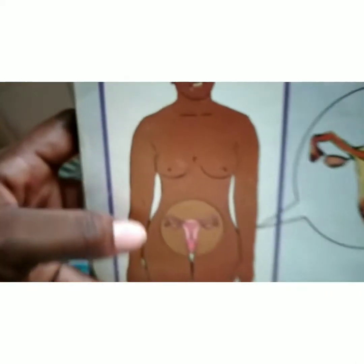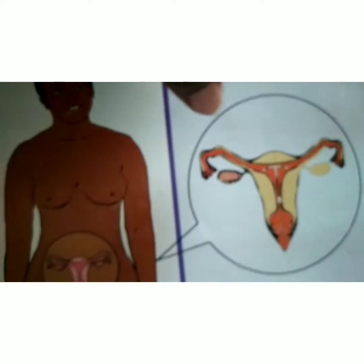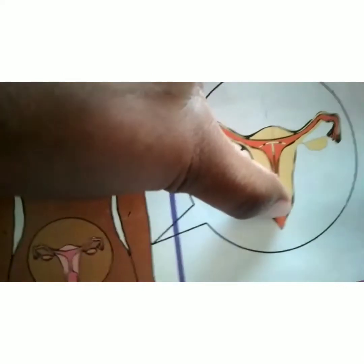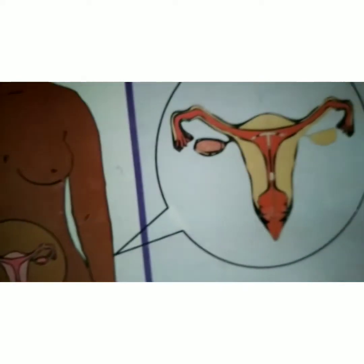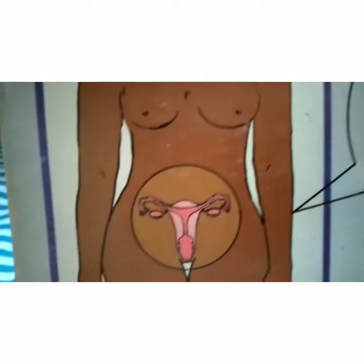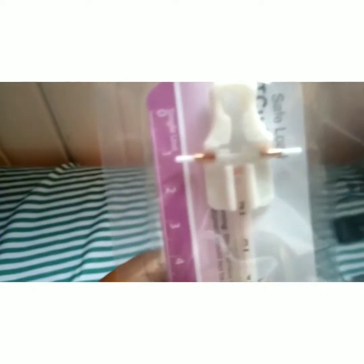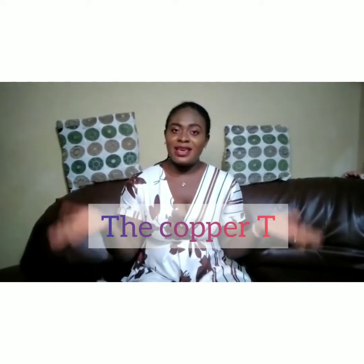The IUD sits inside the uterus like this, and the strings I was talking about hang down through the cervix. This is the actual device — this is what the IUD looks like.